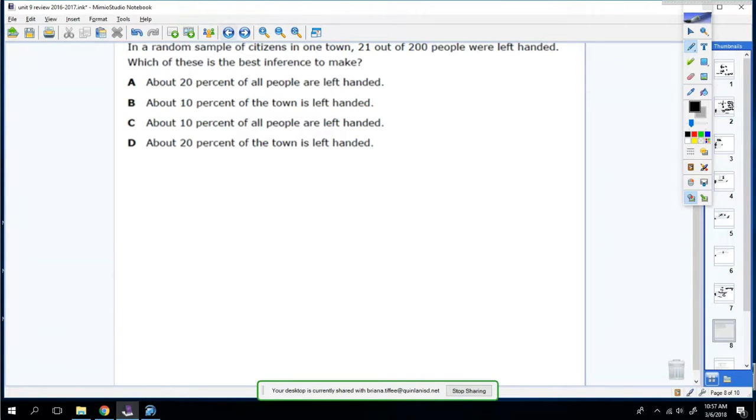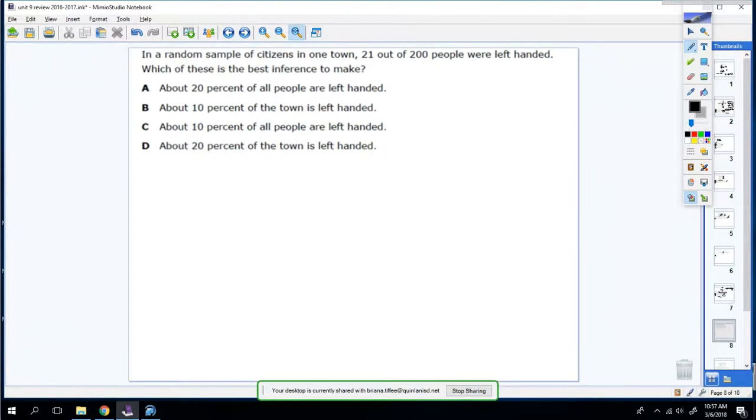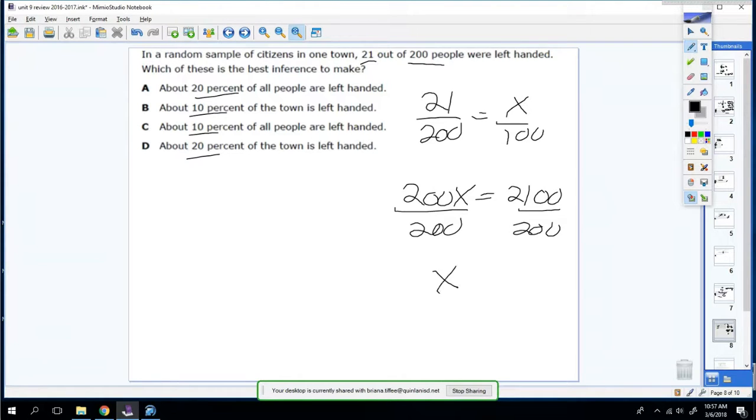In a random sample of citizens in one town, 21 out of 200 people were left-handed. So what are these as percentages? Well, we're talking about percents. So let's find the percent of these people. So 21 out of 200 people equals X over 100 percent. So you cross-multiply, you get 200X equals 2,100. You divide by 200. And when you do that, you get 10.5. So it's about 10 percent.